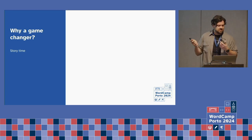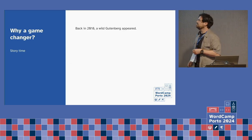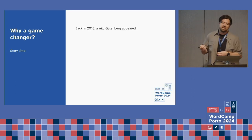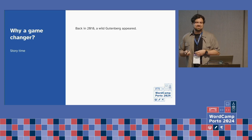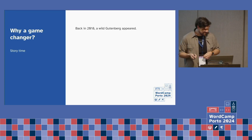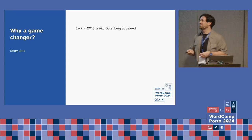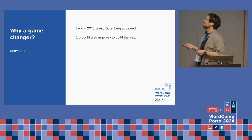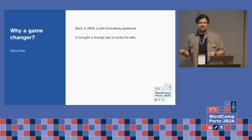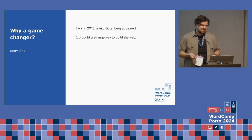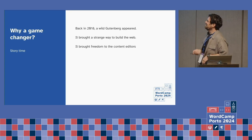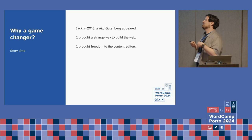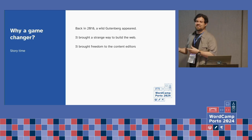Let's start from the beginning. Back in 2018, Gutenberg appeared. And it was polemic, I know. It brought a strange way to build the web — for us developers, it brought a strange way. But it also brought freedom to the content editors.